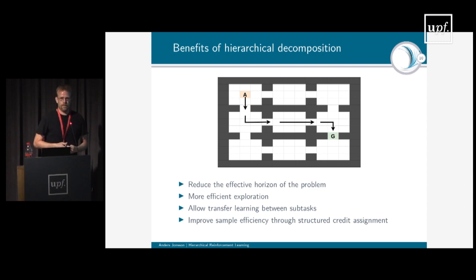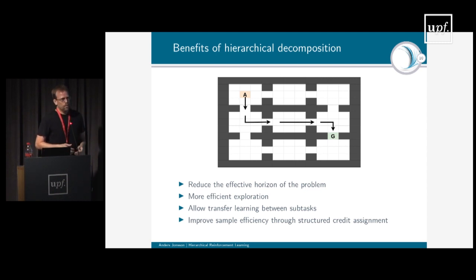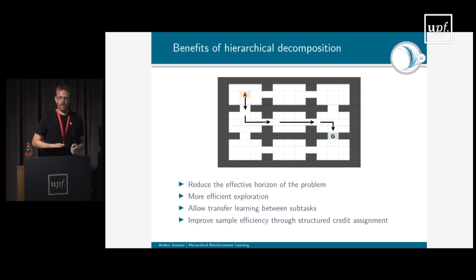Another benefit is transferring learning between subtasks — if I have two subtasks that are very similar, I can reuse knowledge about one to solve the other. Another idea is improving sample efficiency through structured credit assignment. In the original task, the agent only gets reward when it reaches the goal. But when I do subtasks, the subtasks get rewarded for reaching these intermediate points. So the agent internally gets rewarded for going to doorways on the way to reaching the goal, which helps direct the agent and provides intermediate points where you get credit for what you're doing.